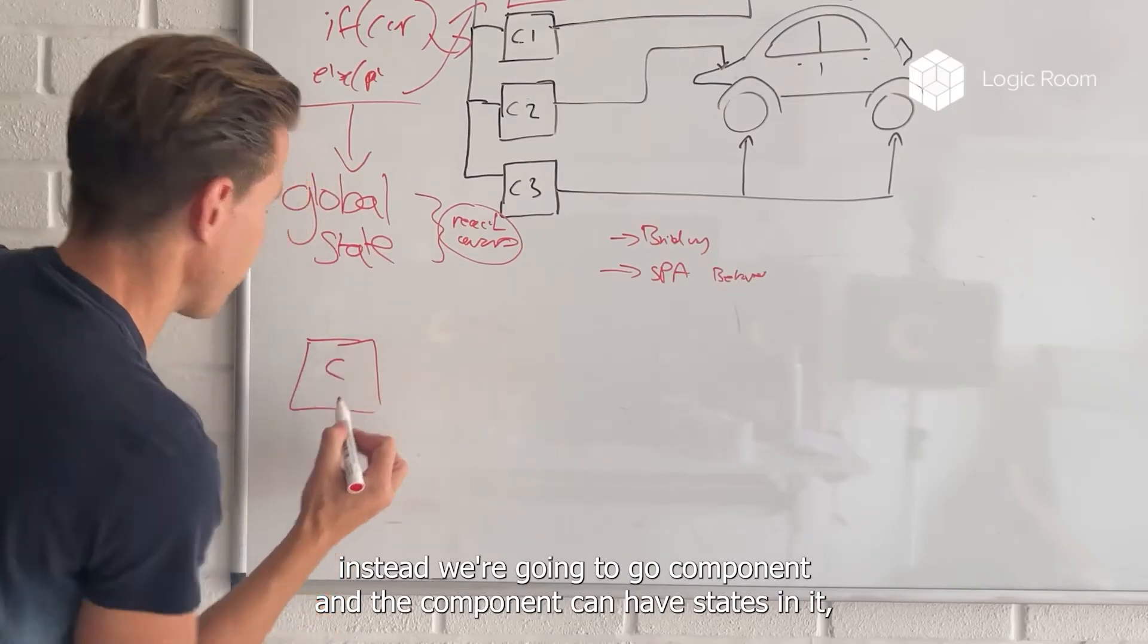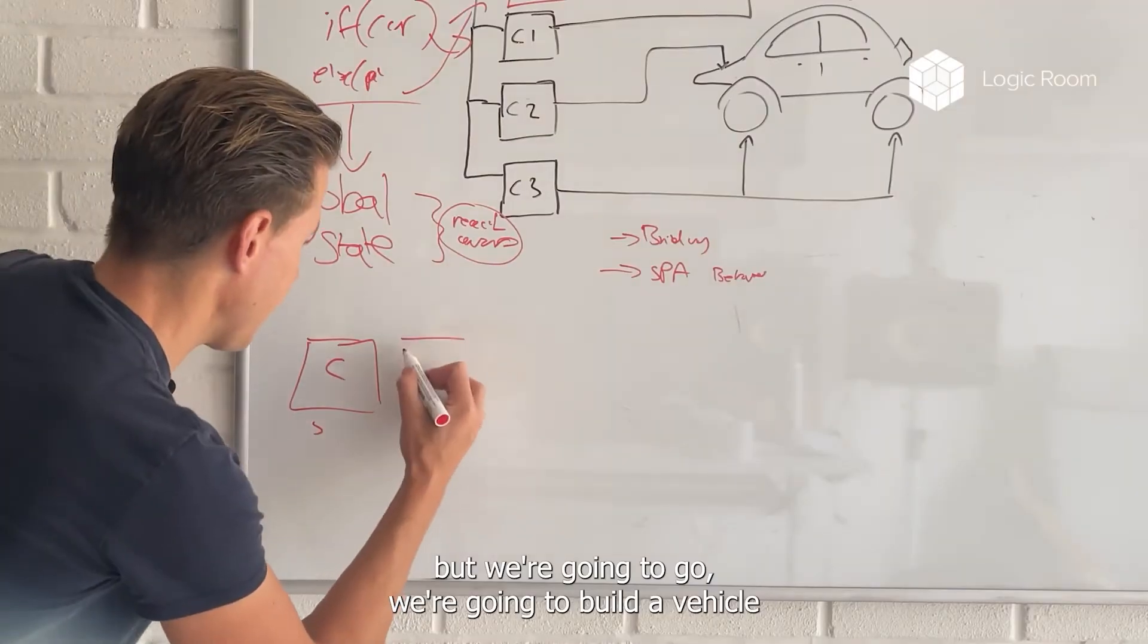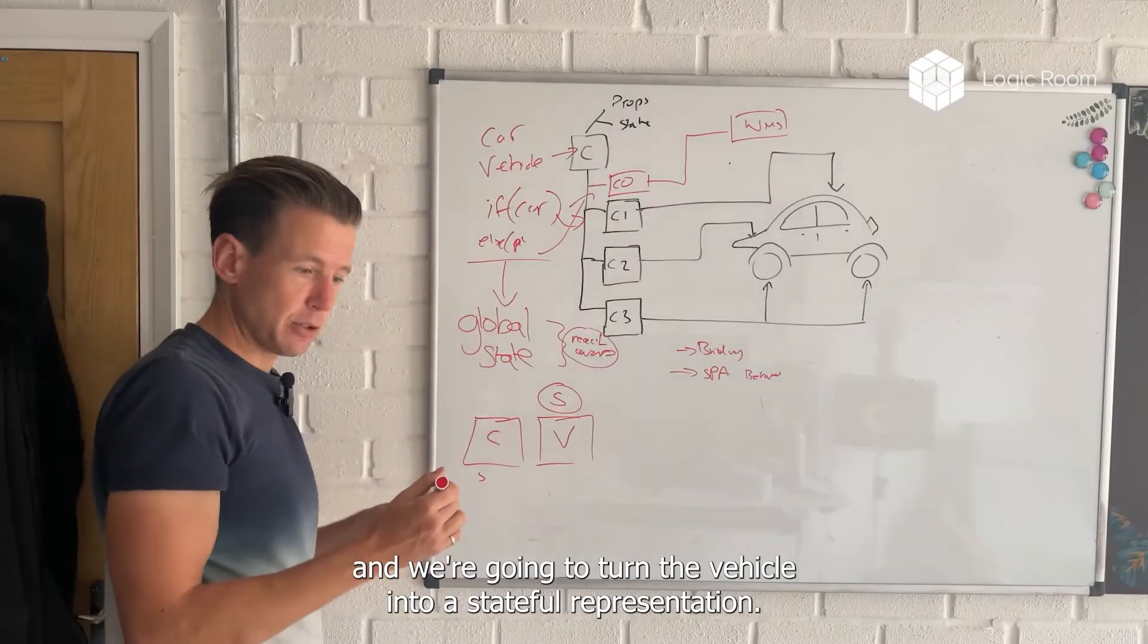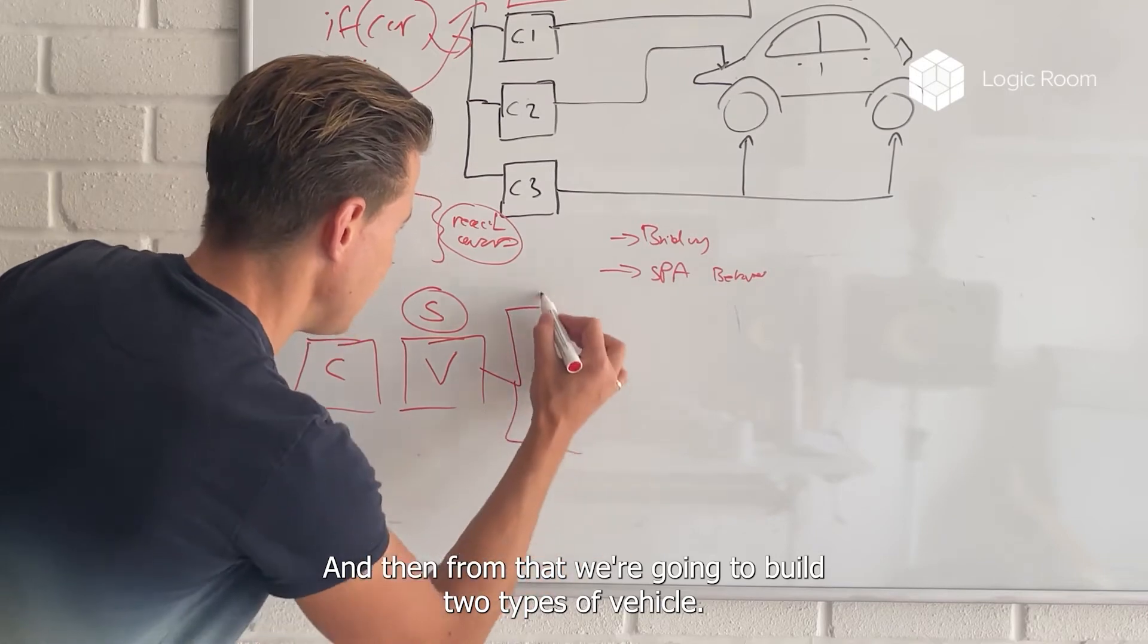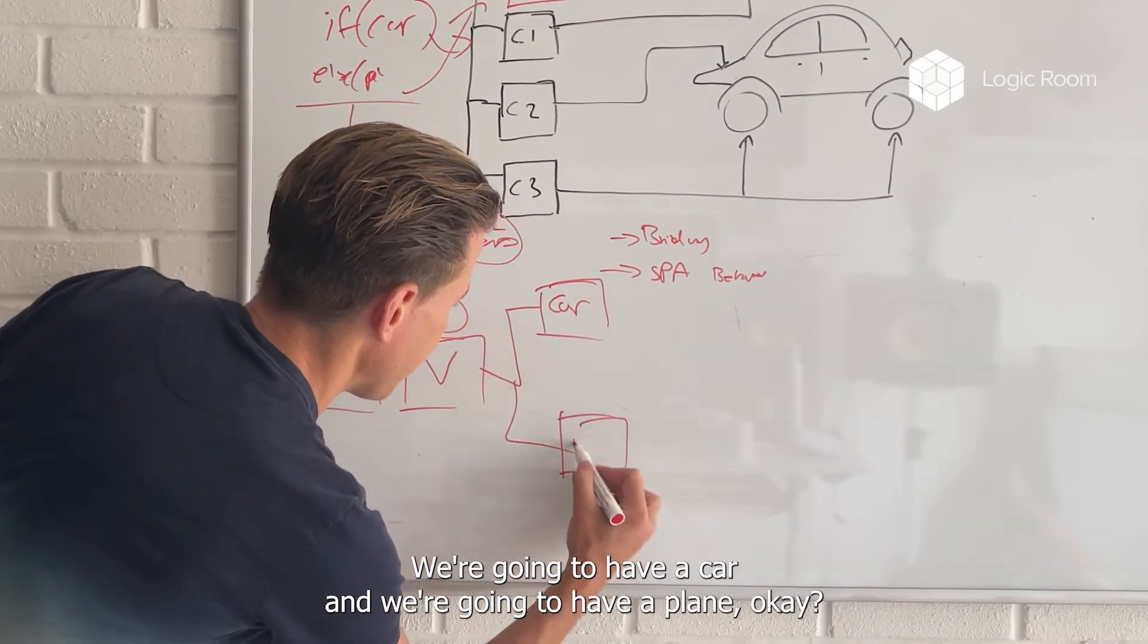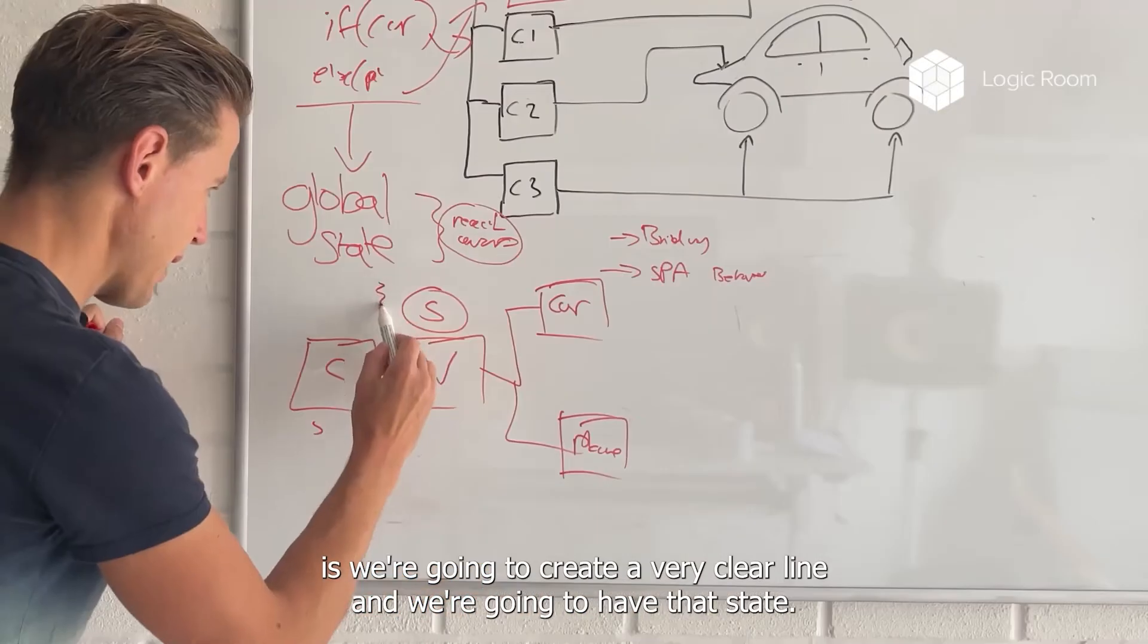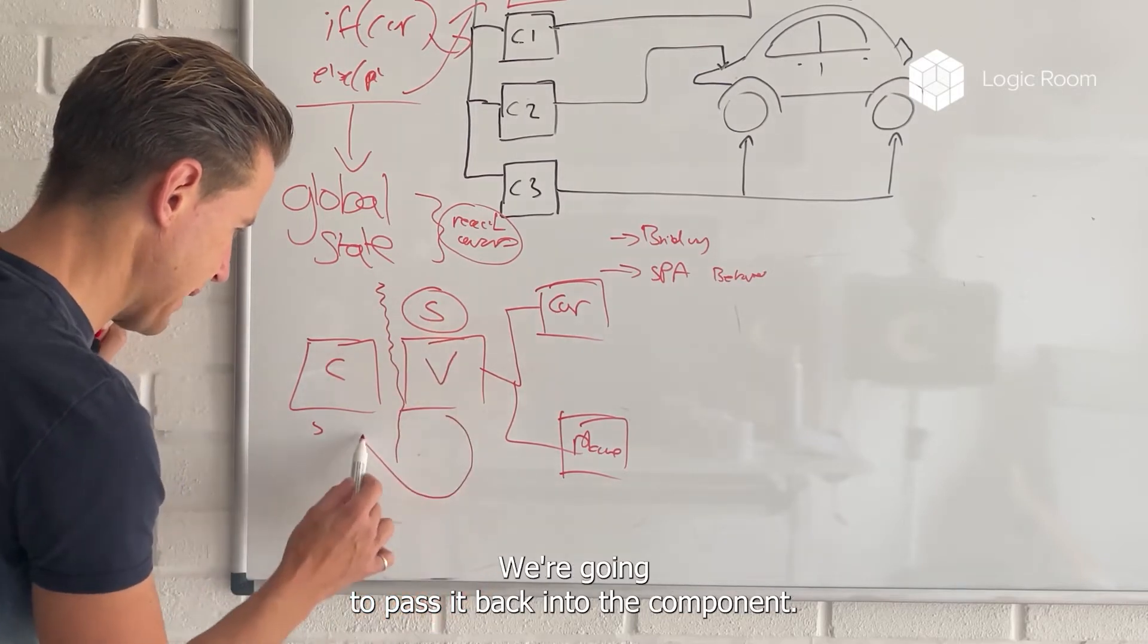What we're going to do is instead, we're going to go component, and the component can have state in it. But we're going to build a vehicle, and we're going to turn the vehicle into a stateful representation. And then from that, we're going to build two types of vehicle, we're going to have a car, and we're going to have a plane. And then we're going to create a very clear line, and we're going to have that state, and we're going to pass it back into the component.